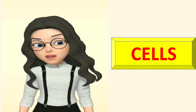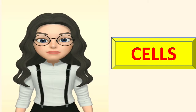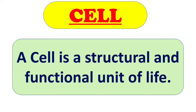Any function performed by an organism is due to the activity of the cells in its body. For example, it is the cells at the tip of the roots in plants that absorb water. Another example is the cells in the leaves which contain chlorophyll and prepare food by utilizing sunlight, carbon dioxide and water. Similarly, in animals, humans can move because of the ability of muscle cells to contract and relax.